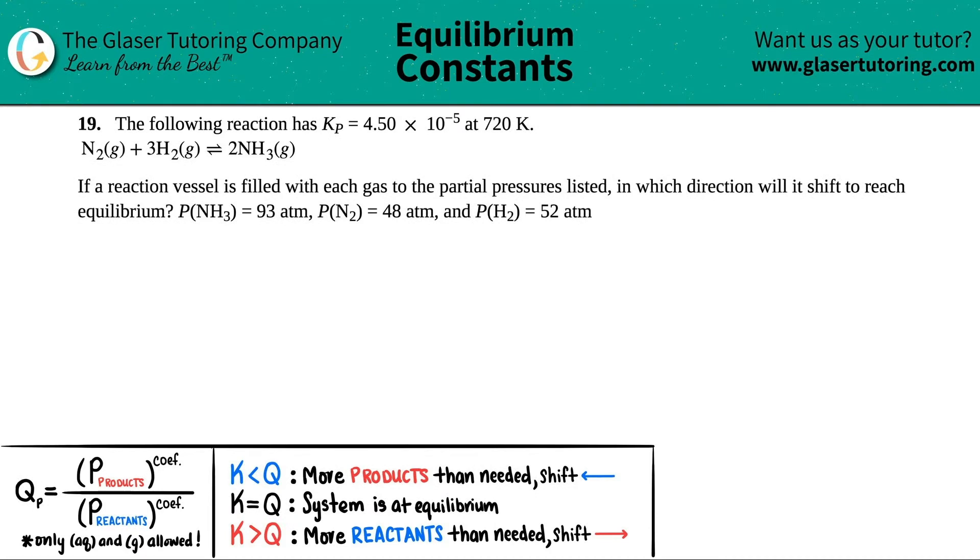Number 19. The following reaction has Kp equals 4.50 times 10 to the negative fifth at 720 Kelvin, and then they give me this equation. N2 gas plus 3H2 gas will come to equilibrium with 2 NH3 gas. Now it says, if a reaction vessel is filled with each gas to the partial pressures listed, in which direction will it shift to reach equilibrium?